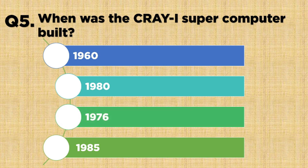The answer is 1976. As you can see, the new QI supercomputer was built in 1976.